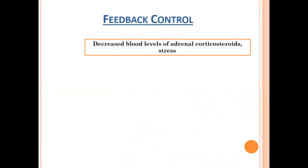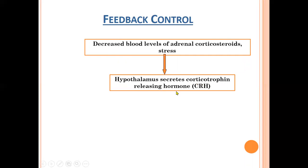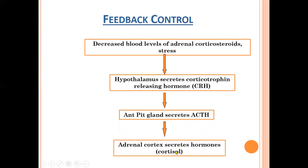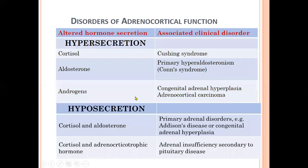The feedback control works as follows: decreased blood levels of adrenal corticoids, such as during stress, lead to production of CRH by the hypothalamus. The anterior pituitary then secretes ACTH, leading to adrenal cortex secretion of cortisol. Hormone secretion is then suppressed via negative feedback — the process by which excess hormone suppresses its own production.